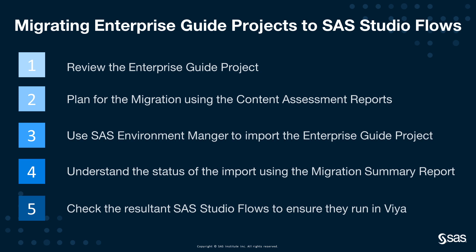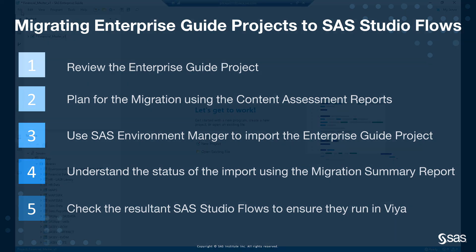Following that, we'll look at planning for the migration using the content assessment reports that relate to Enterprise Guide. We'll then use SAS Environment Manager to import the project. We'll understand the status of the import process using output from SAS Environment Manager and a report called the Migration Summary Report. And following that, we'll look at our flows, the results in SAS Studio, and we'll make sure that they can run in Viya. So let's get started.